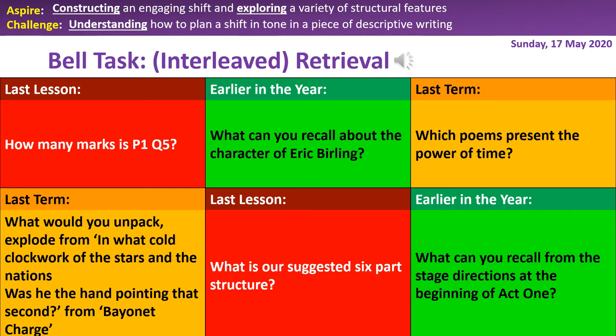What can you recall from the stage directions at the beginning of Act One? The first key thing is that the Birlings live in 'a fairly large suburban house' with 'good solid furniture of the period' — symbolic of their wealth and position in society. But more telling is where Priestley includes in the stage directions that the house is 'not cosy and homelike.' So although they have the privileges, they haven't got the privileges of being a happy family. Edna is clearing the table — replacing dessert plates and champagne glasses with a decanter of port, cigar box, and cigarettes — all symbolic of the privileges and wealth of the Birlings.